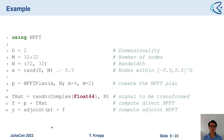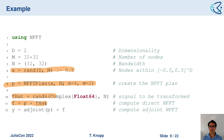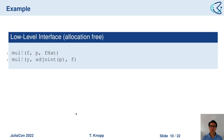Here is NFFT.jl usage in action. We start by defining our sampling nodes, then create what we call a plan which defines the transformation, then we have some input vector, and finally we apply the NFFT by using multiplication — multiplying the plan with our input vector. The same goes for the adjoint transform. This is the common interface for an operator in Julia — we haven't invented new functions but use the existing common notation.